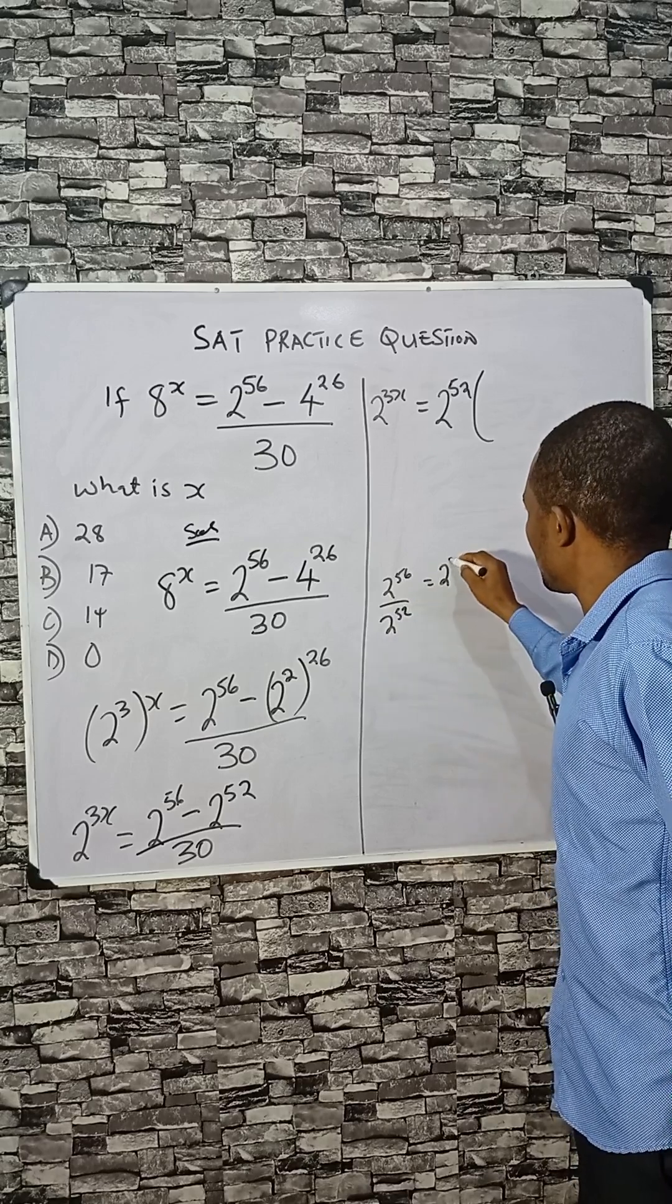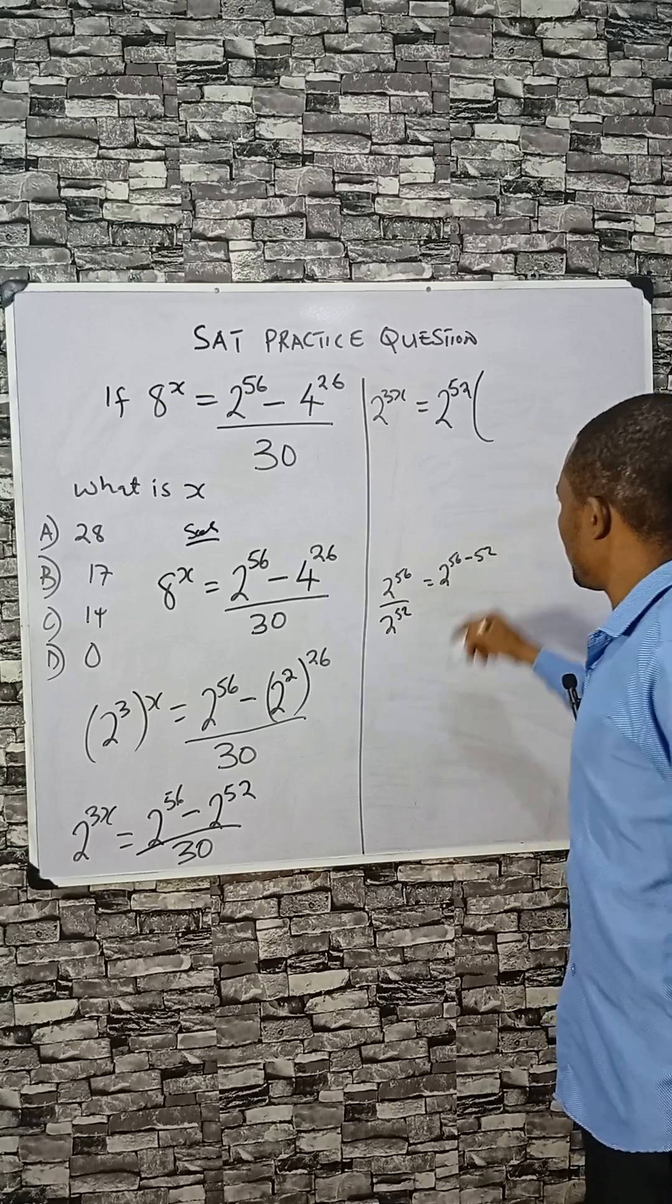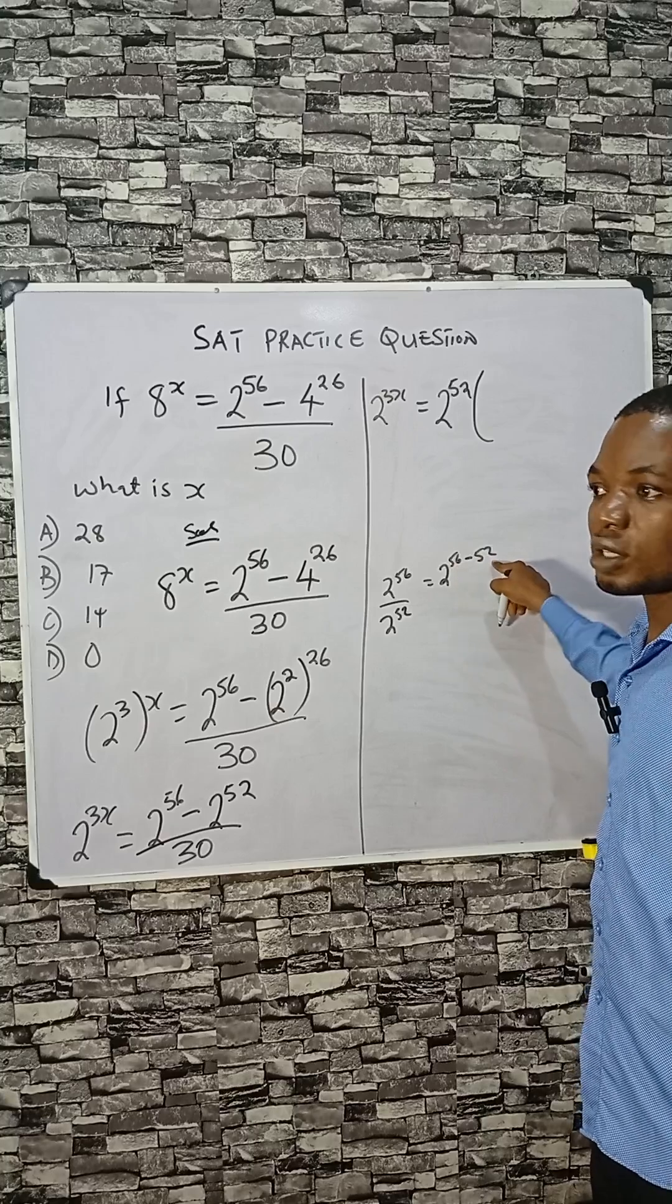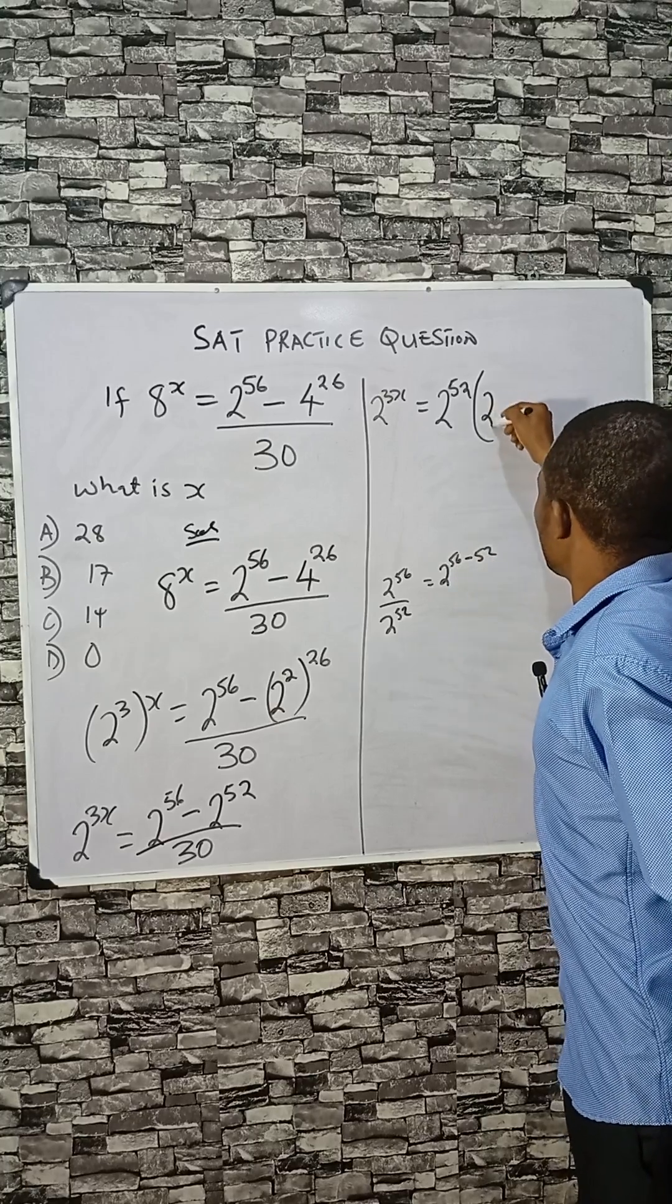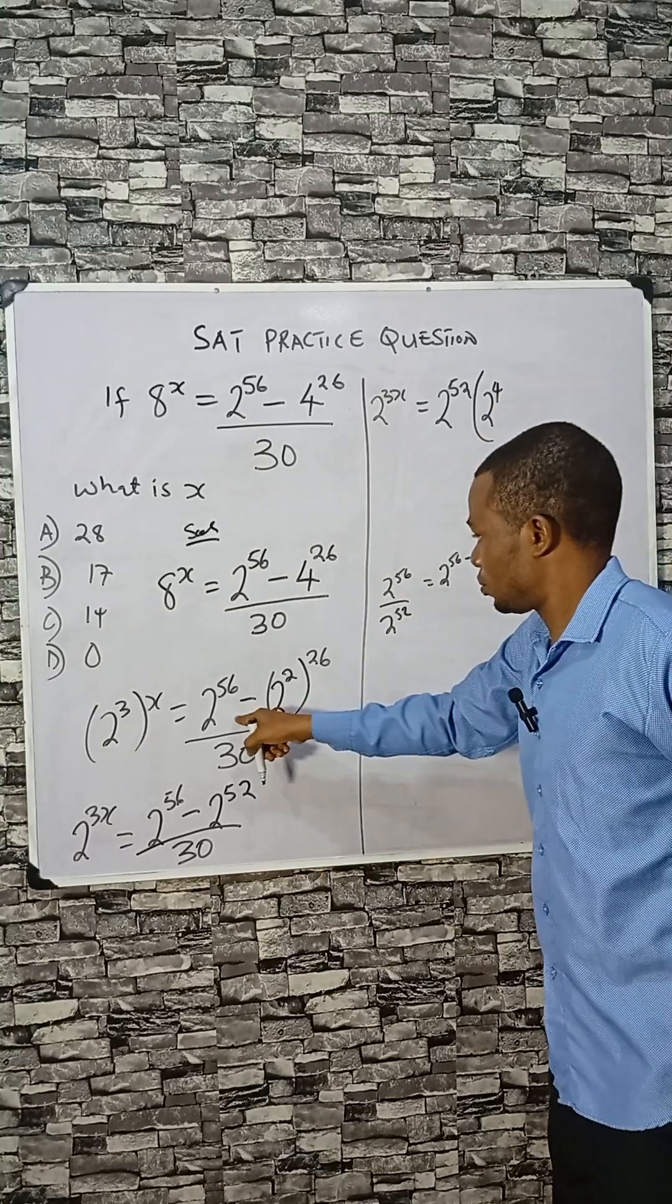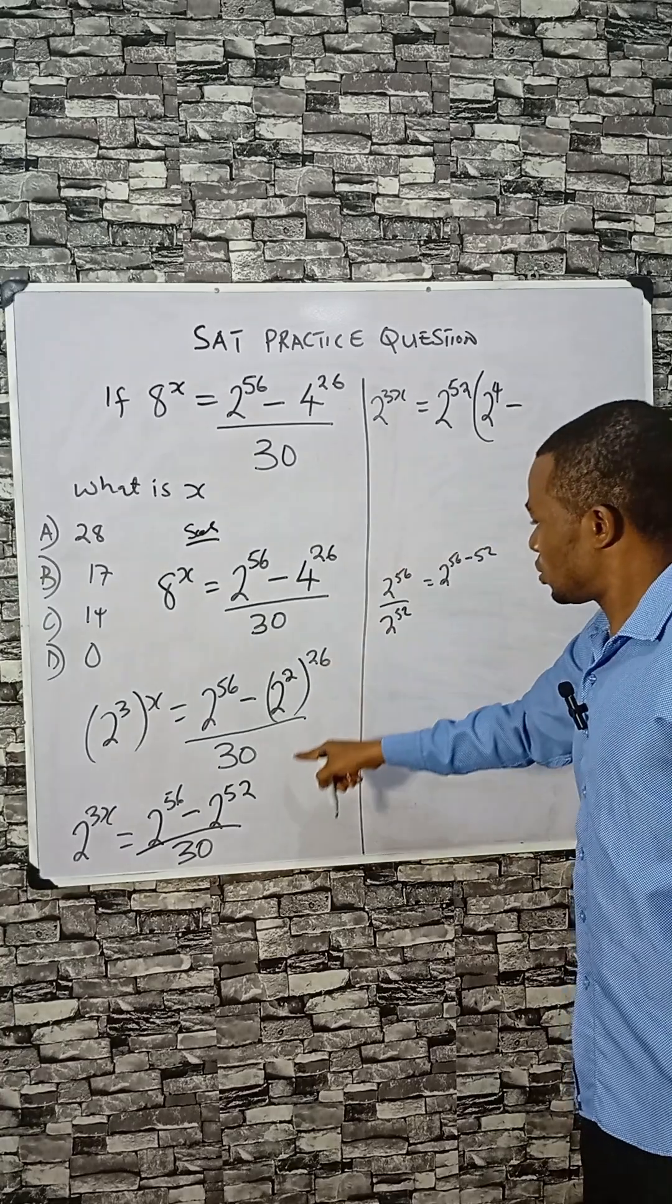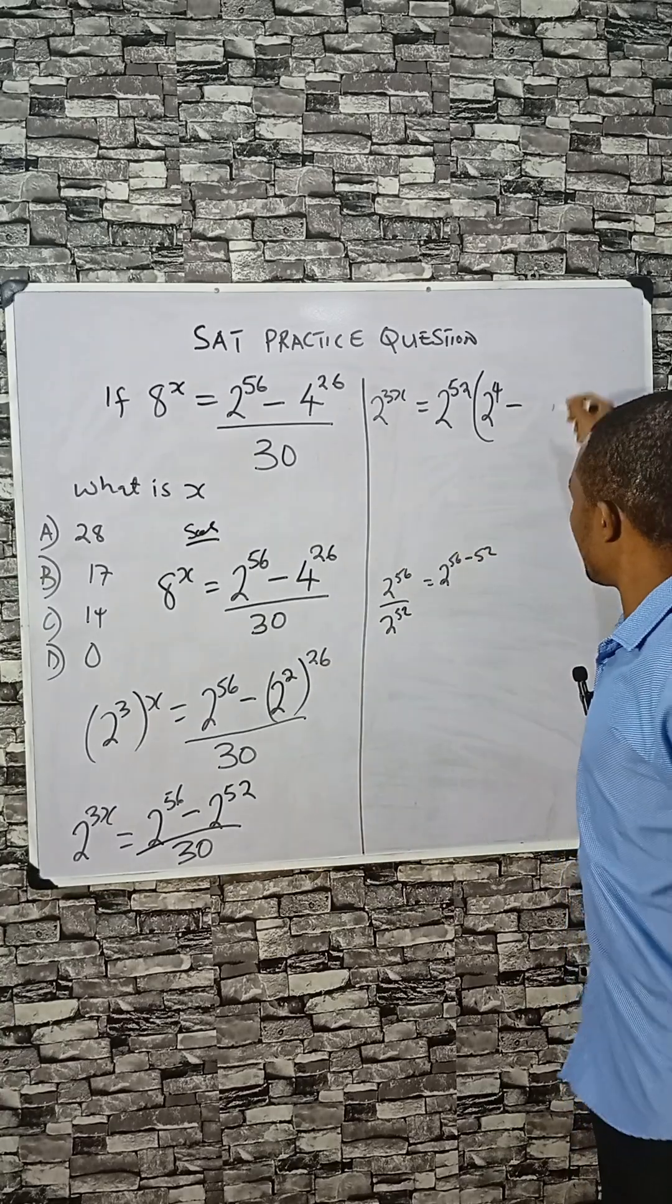It's just like saying 2 this minus 2. This minus 52 is 4, so we have 2 raised to power 4 here, then minus this place dividing by itself, that's 1.